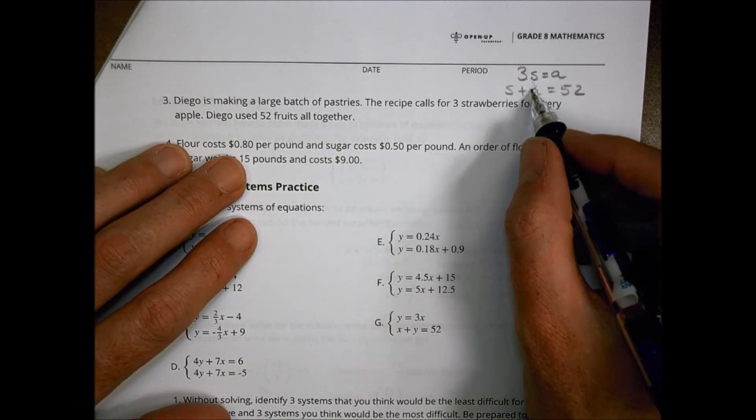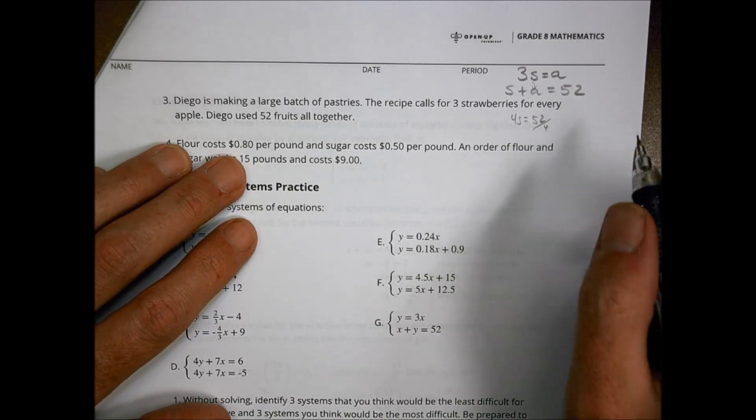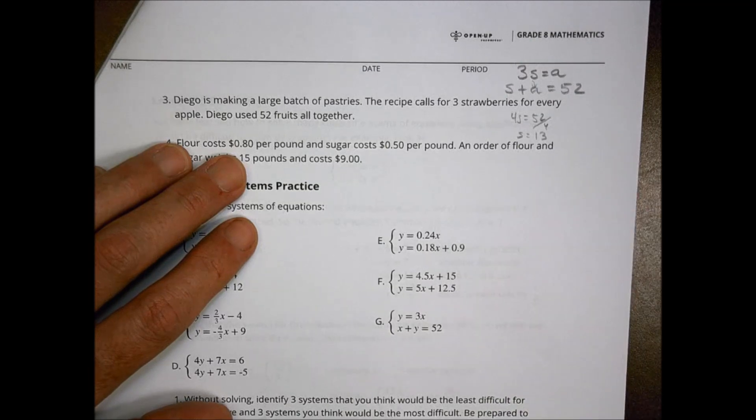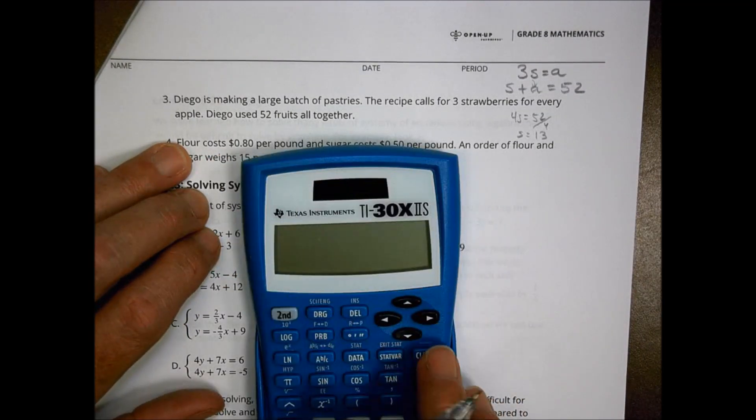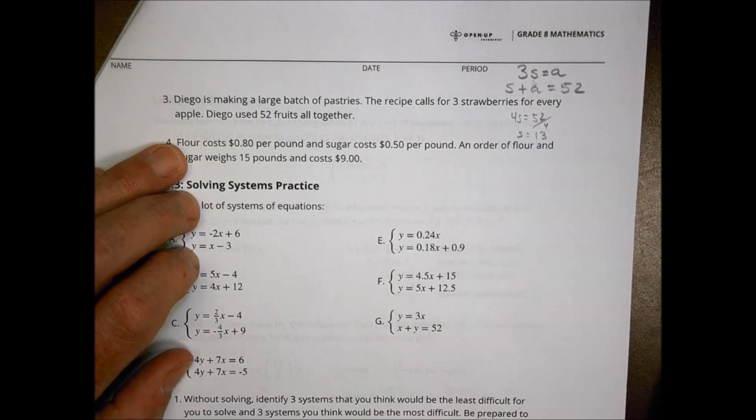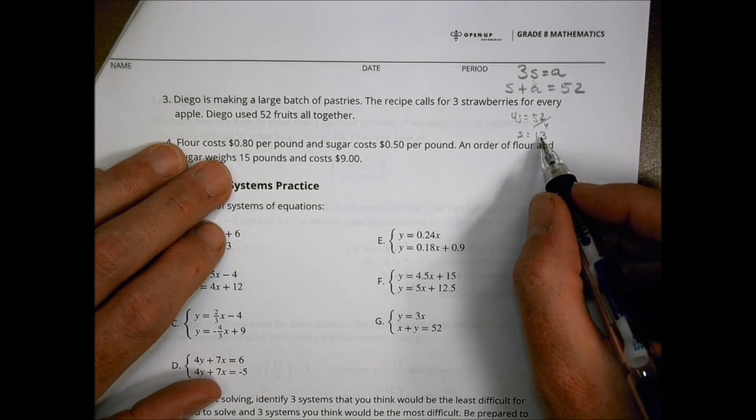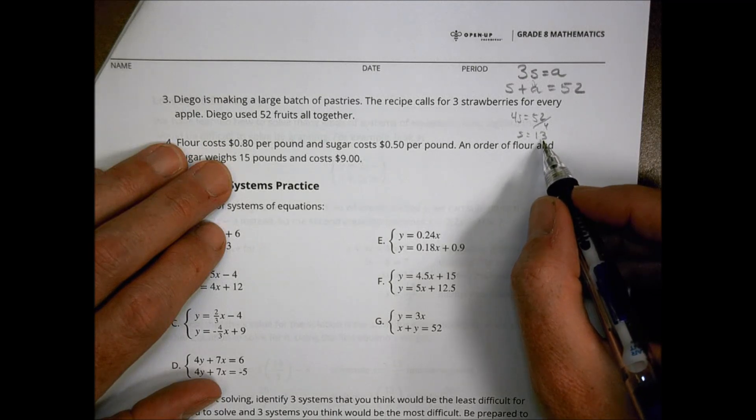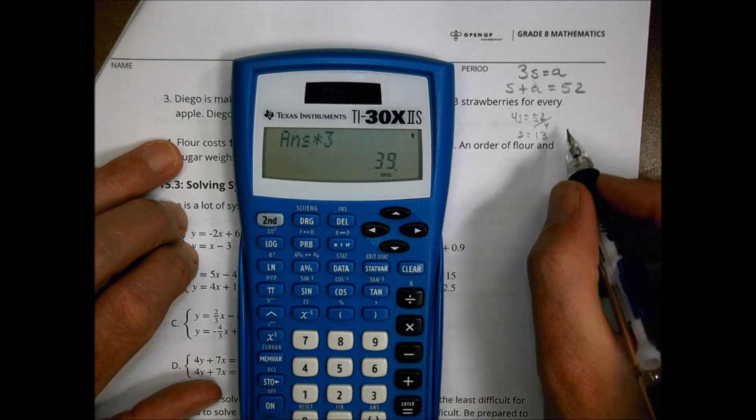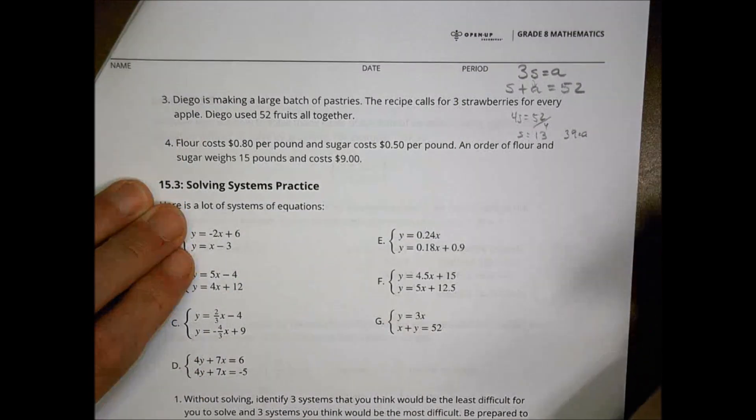If I put three S here, I end up with S plus three S is four S. And if four S equals 52, I divide by four and 52 goes into there 13 times. So we'd have 13 strawberries. I'd multiply 13 times 3 and I'd have 39 apples. And that'd be my solution for what would work for this one here.